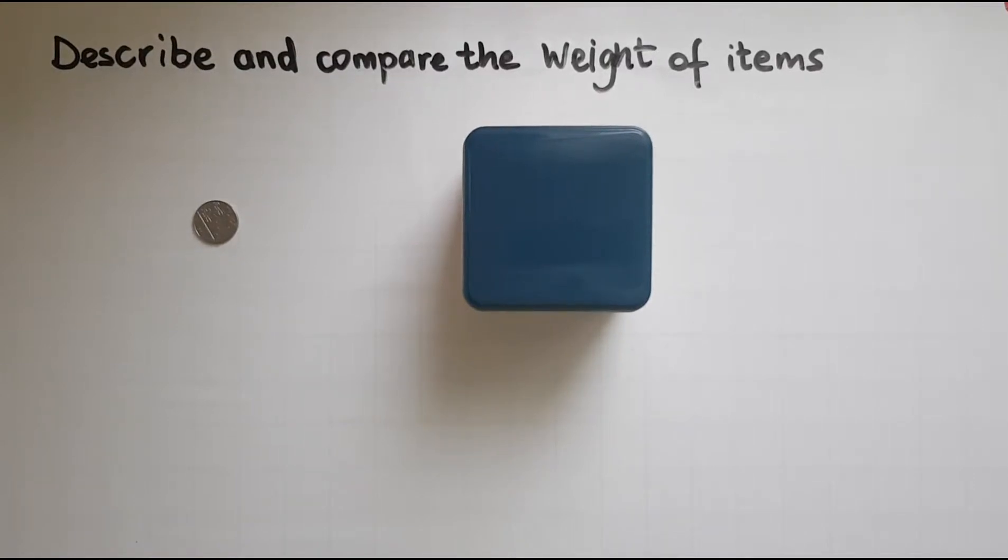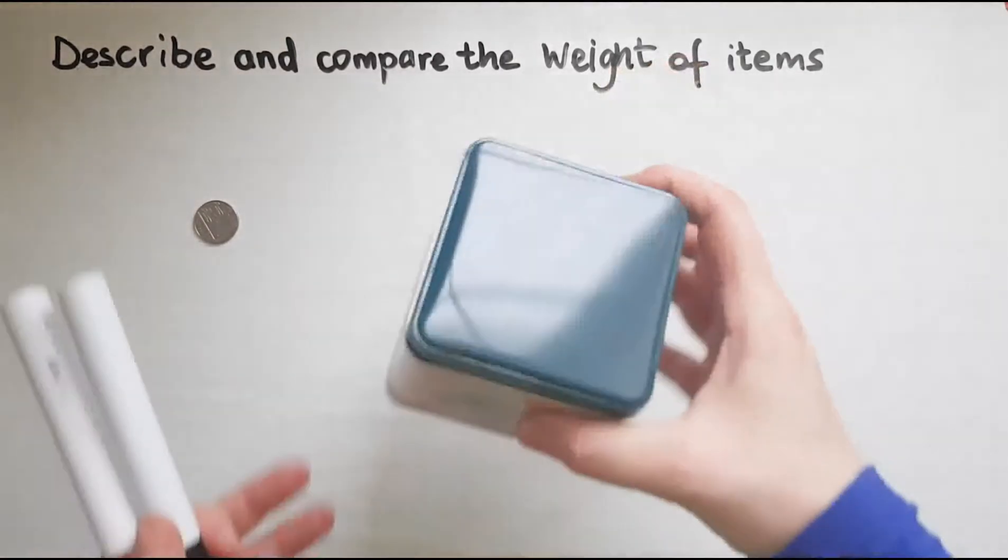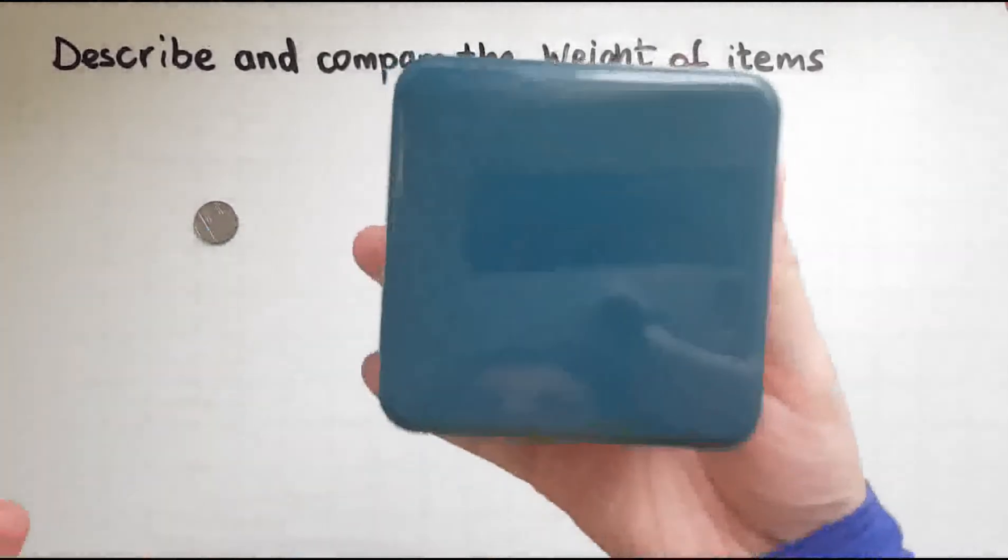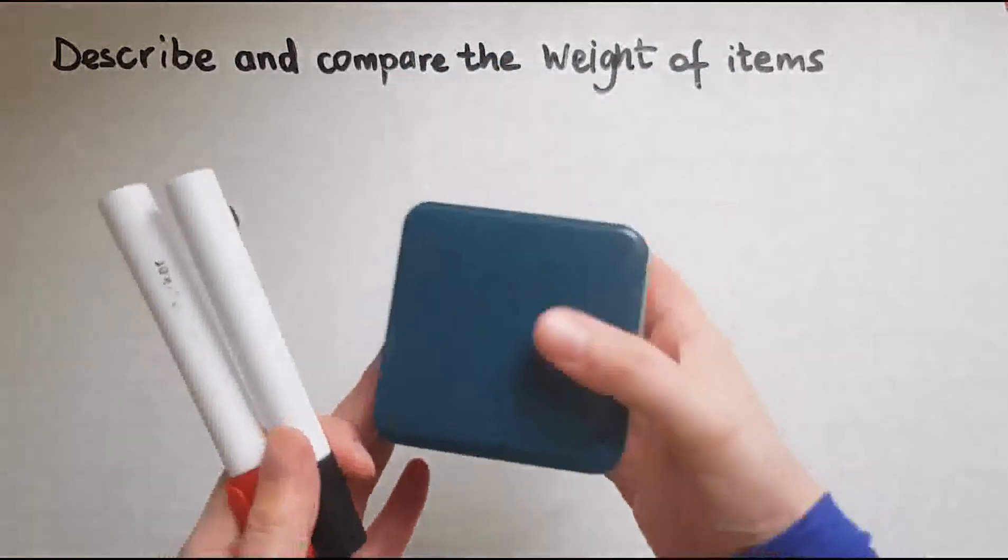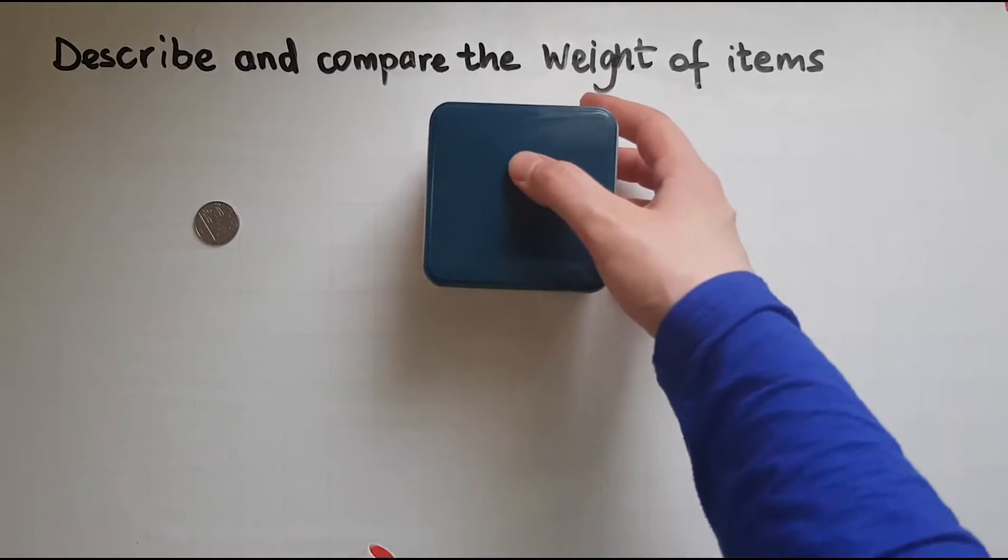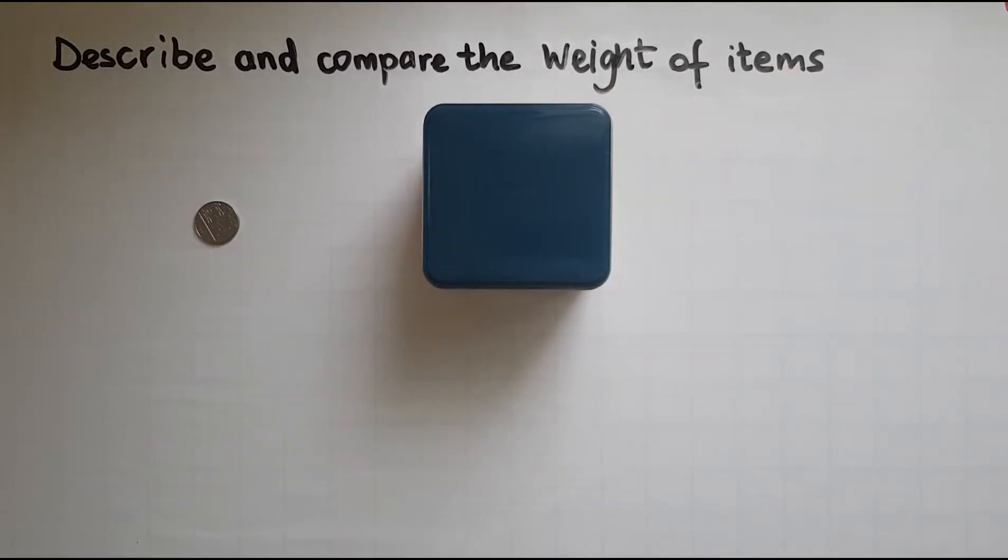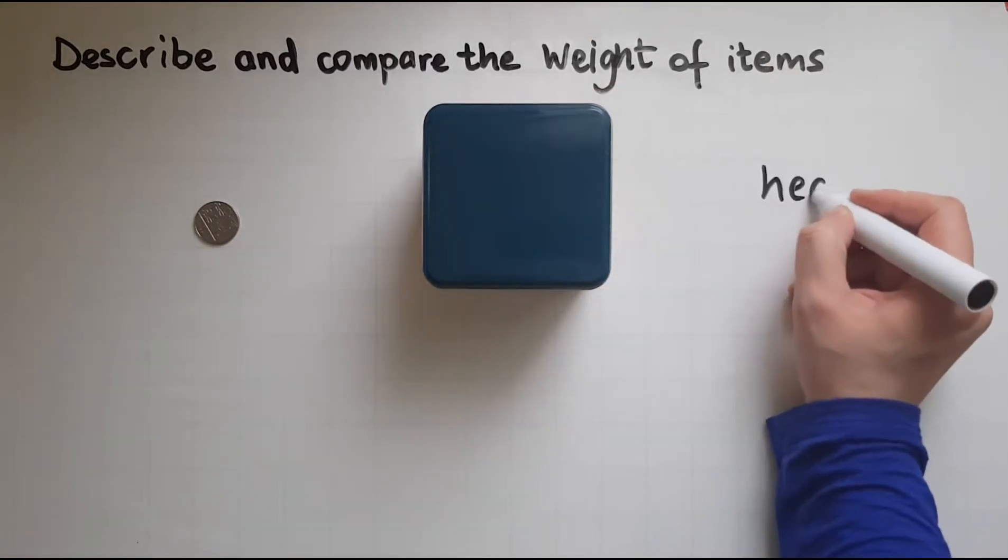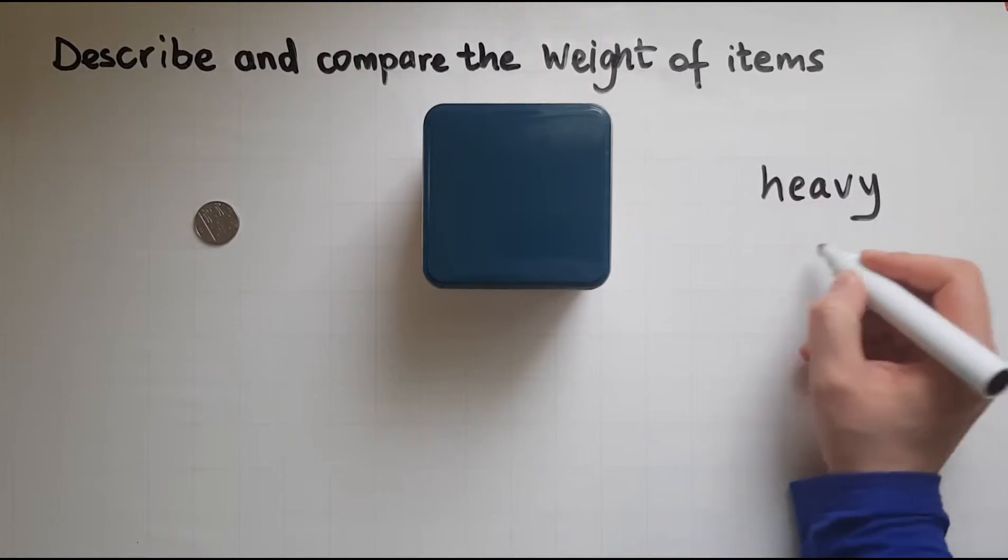In this video we'll learn to describe and compare the weight of different items. Weight is when you actually hold an item and you have a feel how heavy it is or how light it is. So the two key words are heavy and light.